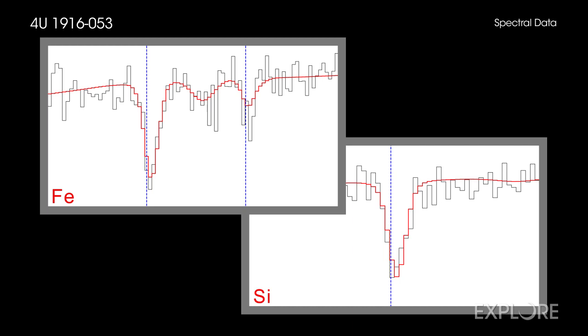They found the characteristic signature of the absorption of X-ray light by iron and silicon in the spectra. In three separate observations with Chandra, the data show a sharp drop in the detected amount of X-rays close to the wavelengths where the iron or silicon atoms are expected to absorb the X-rays.